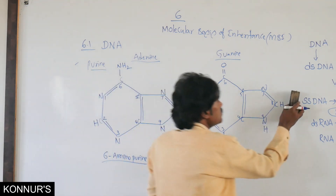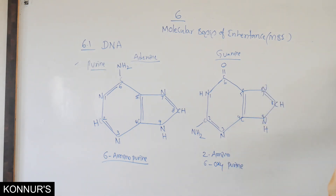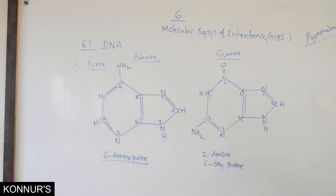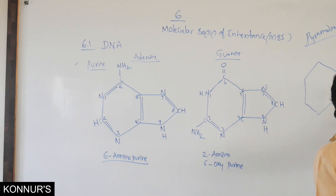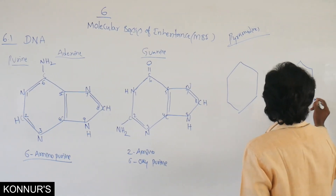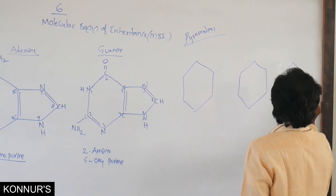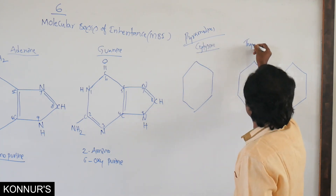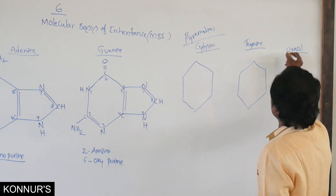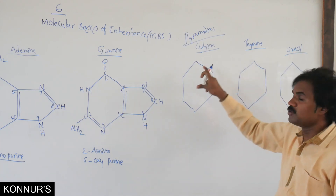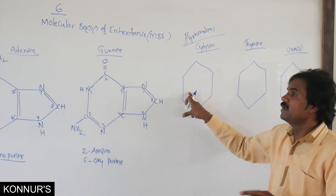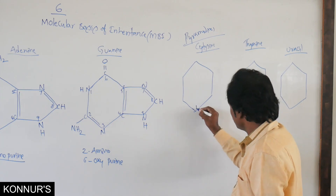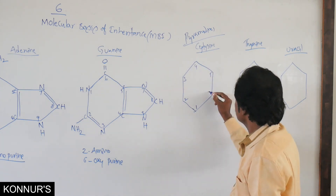Now for pyrimidines — in pyrimidines, a single hexagonal ring is present. The pyrimidines are cytosine, thymine, and uracil. In RNA, uracil is present; in DNA, thymine is present. Cytosine is common to both RNA and DNA. Nitrogen atoms are present at positions 1 and 3 in the hexagonal ring. Numbering from here onwards is important.